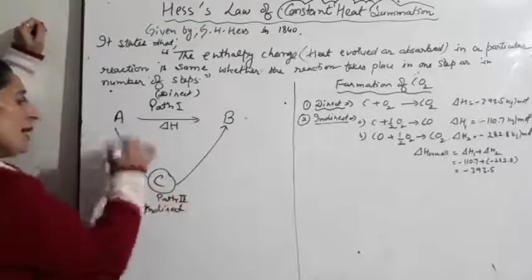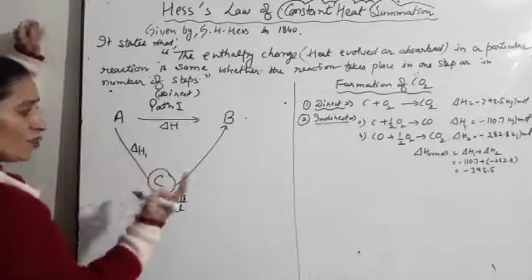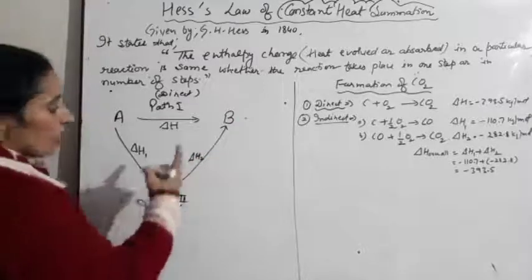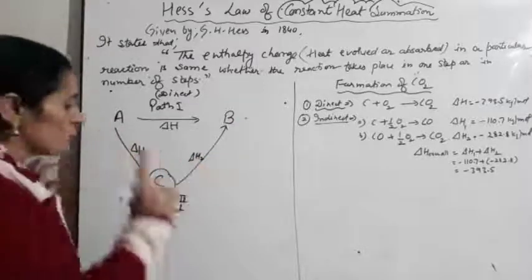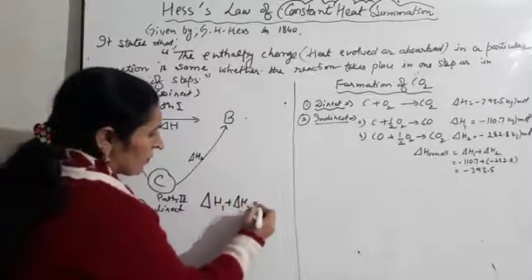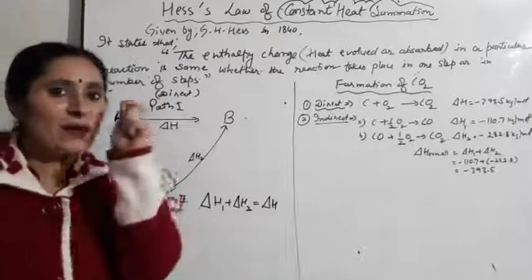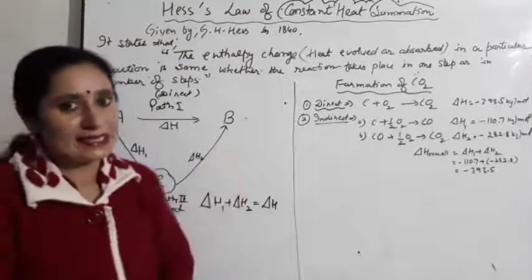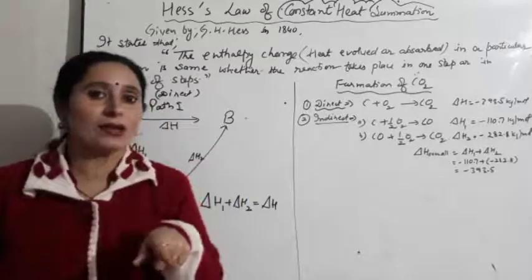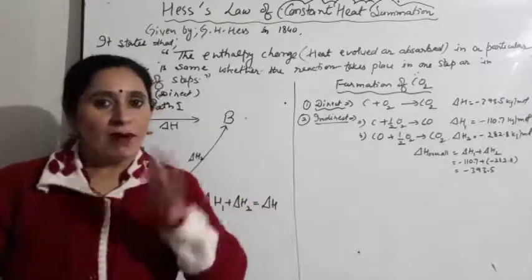In path two, when A becomes C there is enthalpy change delta H1, and when C becomes B there is enthalpy change H2. Experimentally it was found that delta H1 plus delta H2 equals delta H every time. Whether a reaction happens in one step or more steps, the change in enthalpy will be the same.